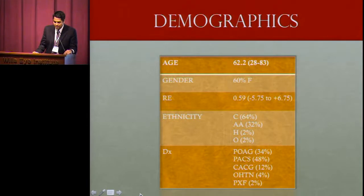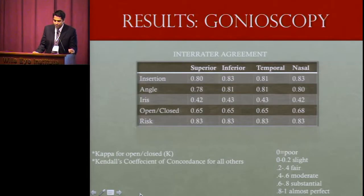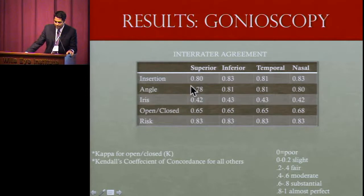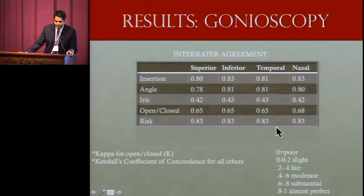Average patient age was about 60. The diagnosis was fairly widespread amongst both open angle and angle closure glaucomas, suspects, and narrow angles. Looking at interrater agreement amongst the gonioscopists, there was almost perfect agreement in the SPACE classification gonioscopy — including insertion grade, angle grade, and the determination of risk.